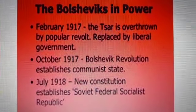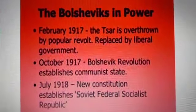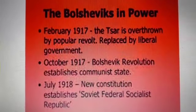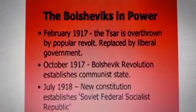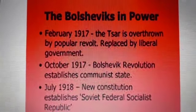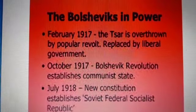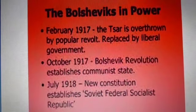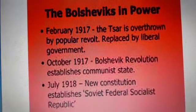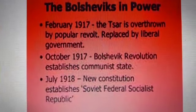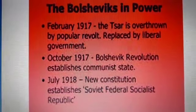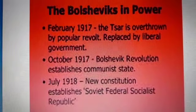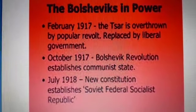Bolsheviks in Power: in October, Lenin persuaded the Bolshevik Central Committee to decide on immediate revolution. Trotsky prepared a detailed plan. On 7th November, key government buildings including the Winter Palace and the Prime Minister's headquarters were seized by factory workers and revolutionary troops. On 8th November 1917, a new communist government was in office in Russia, headed by Lenin. The Bolshevik Party was renamed the Russian Communist Party.